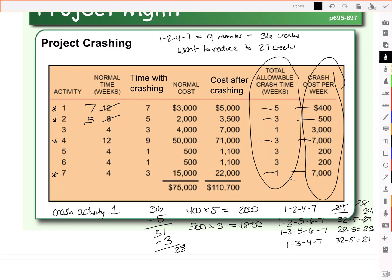Now notice the path 1, 3, 5, 6, 7. It doesn't contain activity 2. So does it change? No. So neither does the 1, 3, 4, 7. It doesn't change either. So again, we look at our paths and notice that our critical path still takes the longest, so we're still on the same critical path.